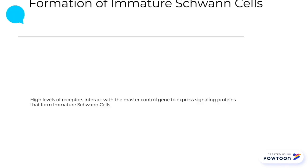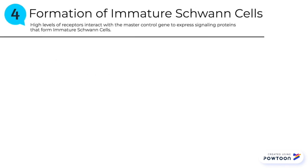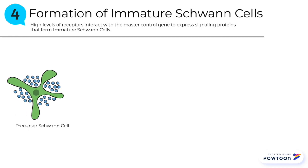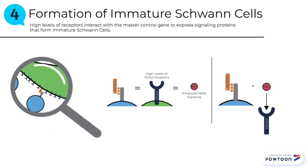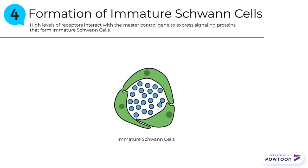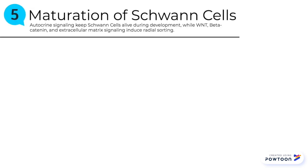Once the precursor Schwann cells are formed, the next step in this process is the formation of the immature Schwann cells. High levels of receptors interact with the master control gene to express signaling proteins that form immature Schwann cells. Notch signaling is initiated to maintain high levels of ERBB2 receptors in Schwann cell precursors. The high levels of these receptors enhance NRG1 signaling, or neuregulin, which is the master control gene in this process. Enhanced neuregulin interacts with the signaling protein NOTCH to accelerate the formation of immature Schwann cells. Here you see an immature Schwann cell.